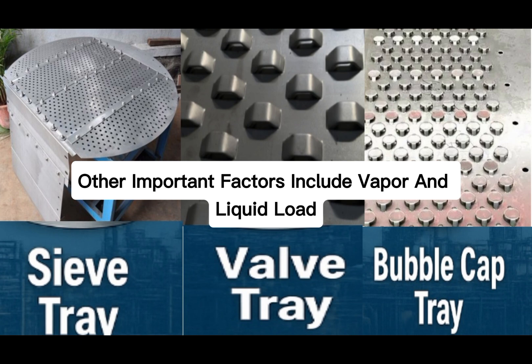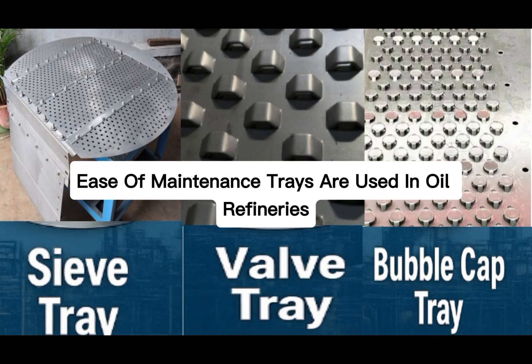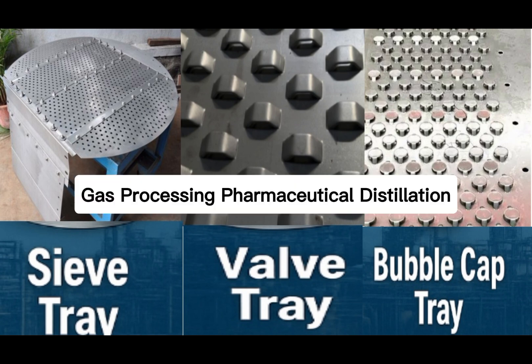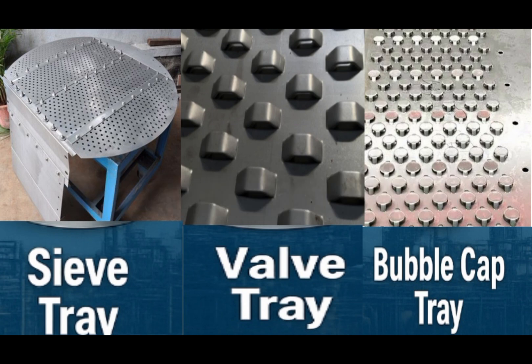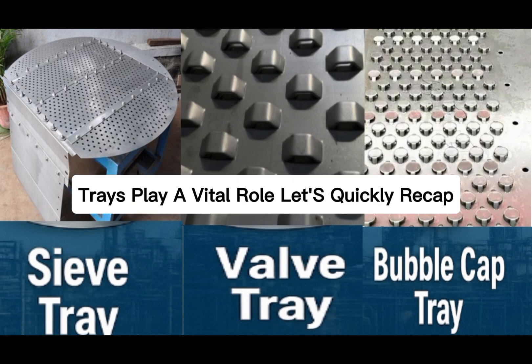Other important design factors include vapor and liquid load, foaming tendency, corrosion resistance, and ease of maintenance. Trays are used in oil refineries, fertilizer plants, chemical plants, gas processing, pharmaceutical distillation, and alcohol and beverage industries. In short, any place where vapor-liquid separation is needed, trays play a vital role.